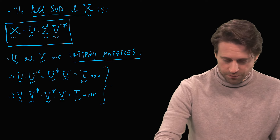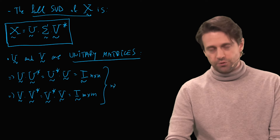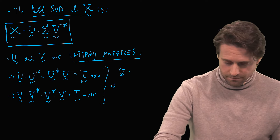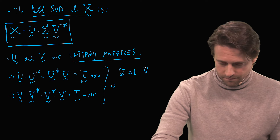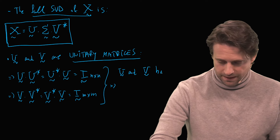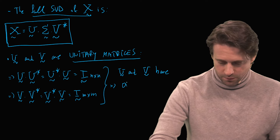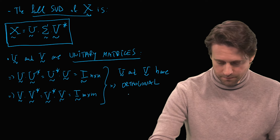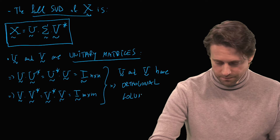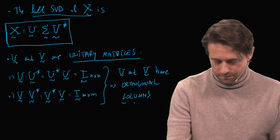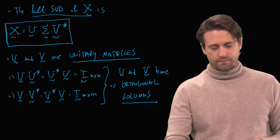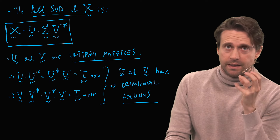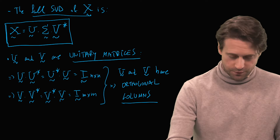Now there is an important consequence of this: U and V have orthogonal columns. Another interesting matrix that we are dealing with is the matrix Sigma, so let's talk a little bit about Sigma.